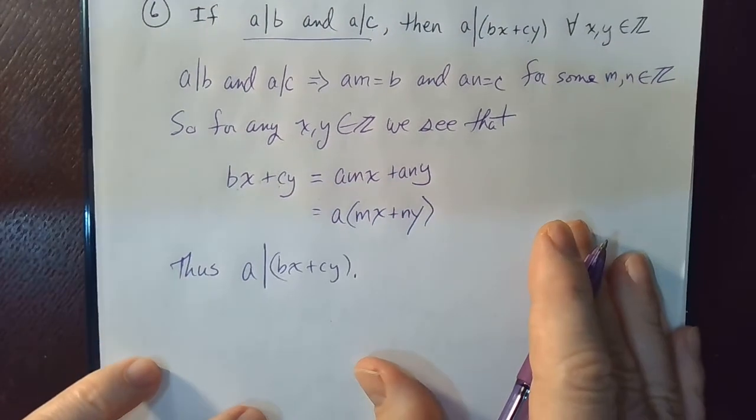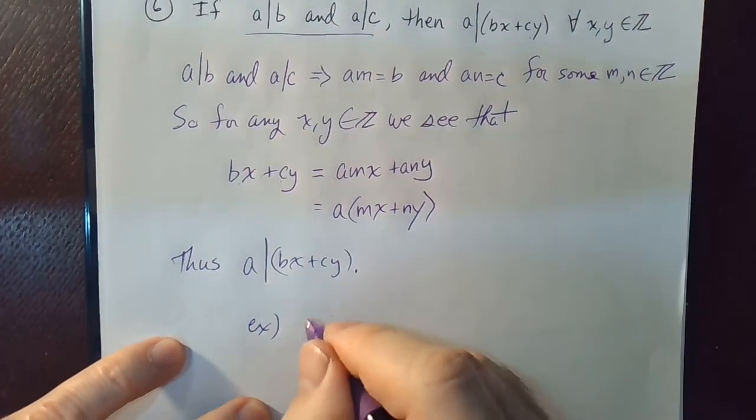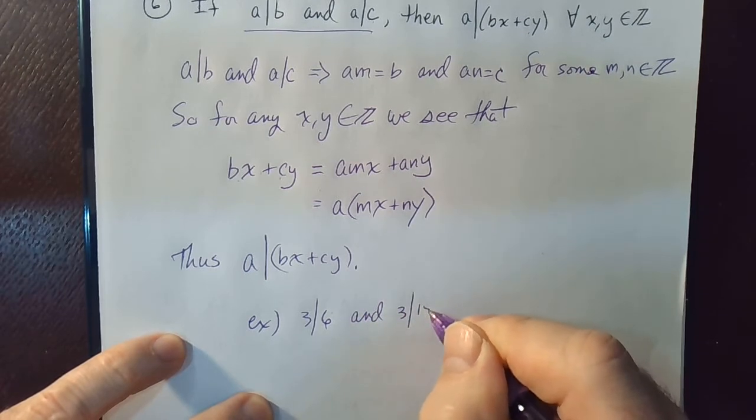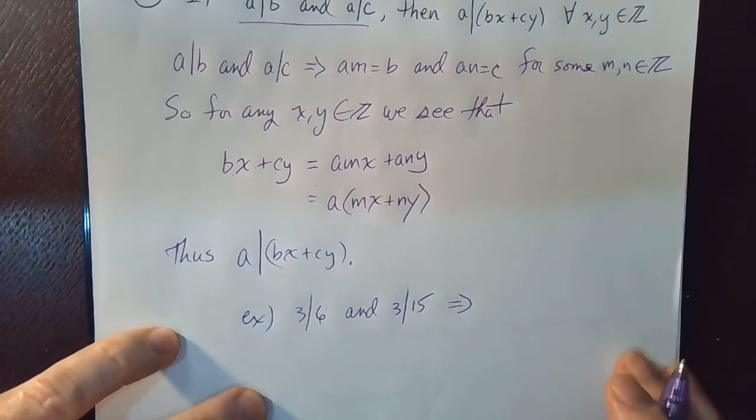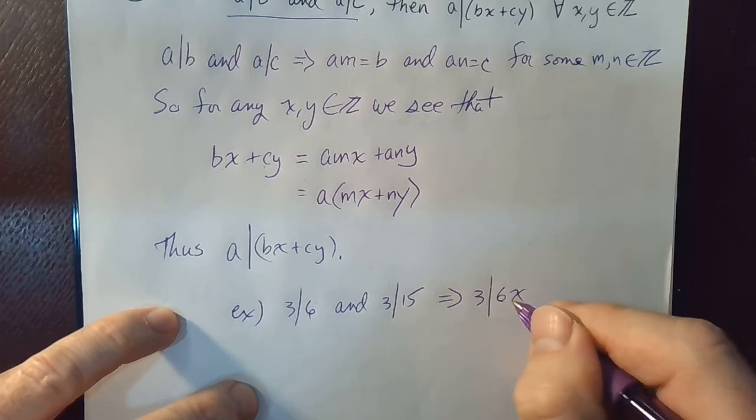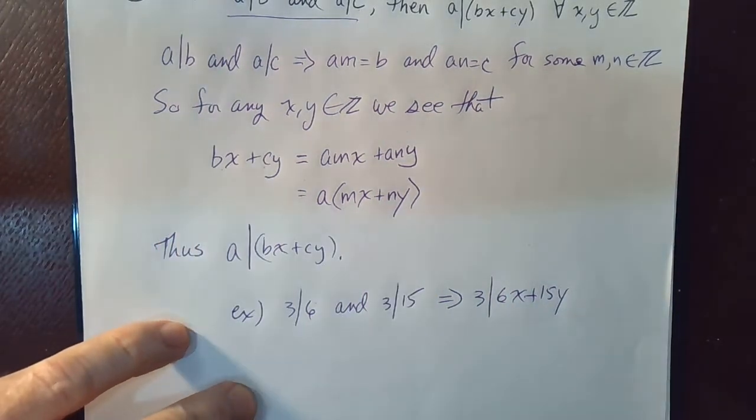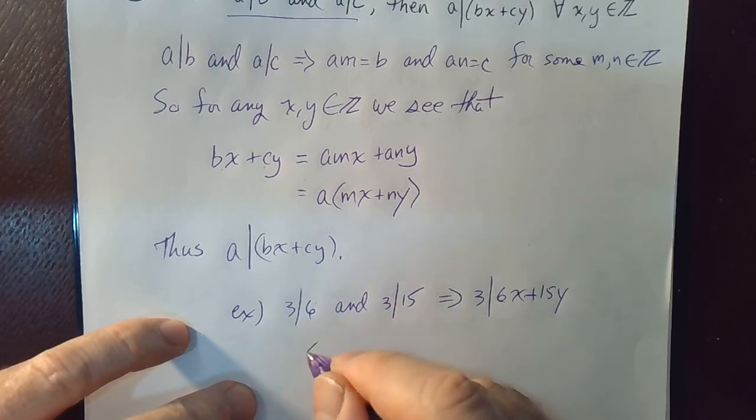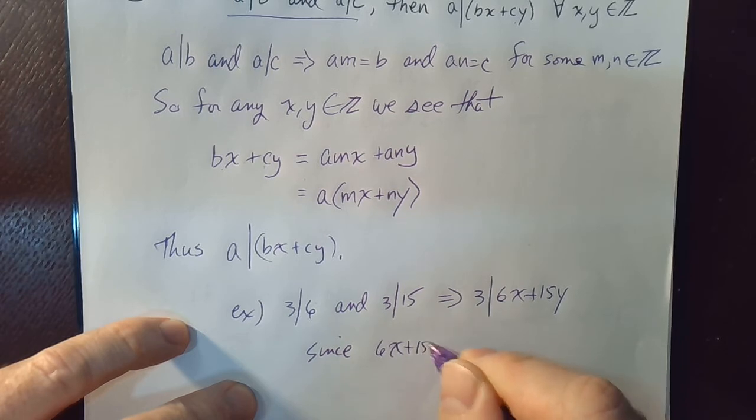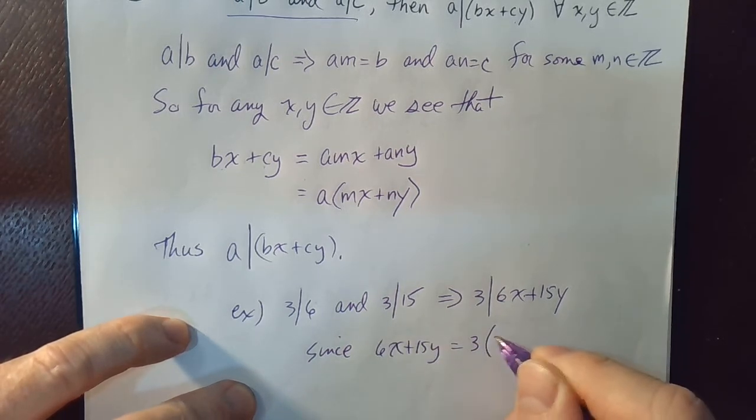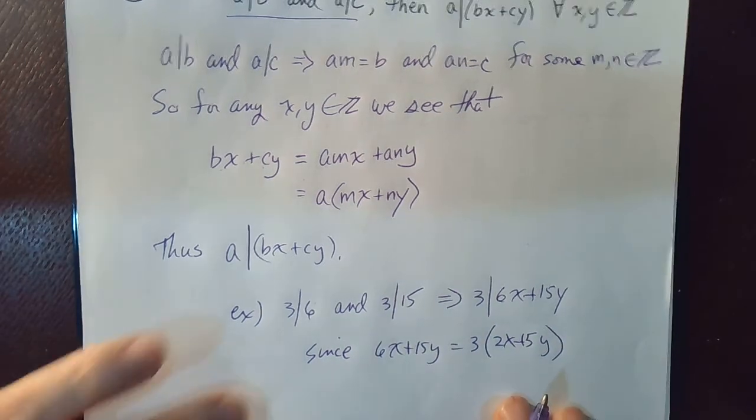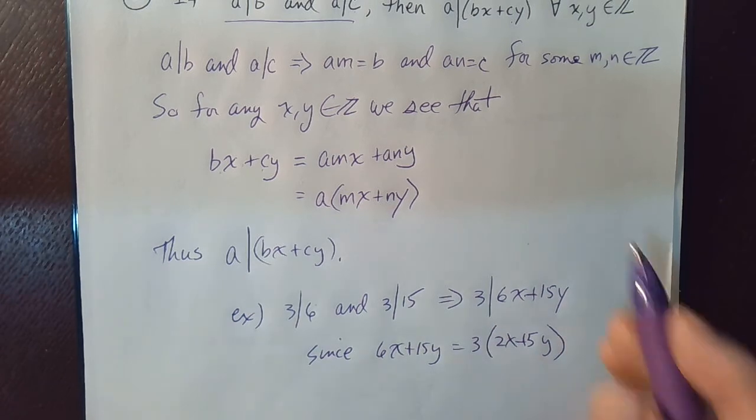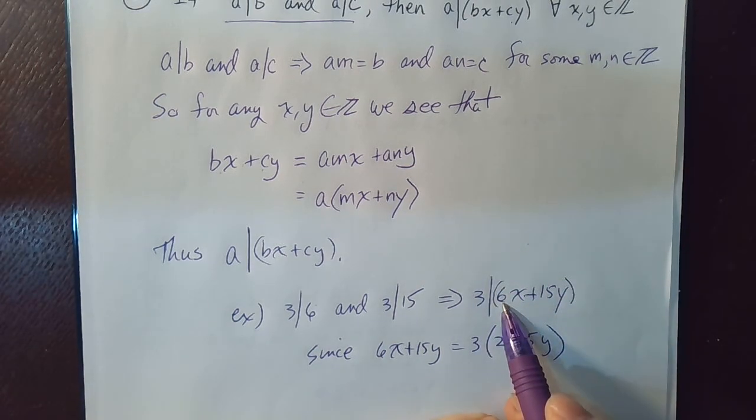And we could do a real, I've got a little bit of room down here. We could do a real simple example. If I said 3 divides 6, and maybe 3 divides 15, like that. Well, that implies that 3 divides 6X plus 15Y according to this. And let's show that that's true. And we could just say that's true since 6X plus 15Y is equal to, and I'm just going to factor the 3 out of it. So clearly, if 3 divides 6, and 3 divides 15, then 3 will divide any linear combination of 6 and 15.